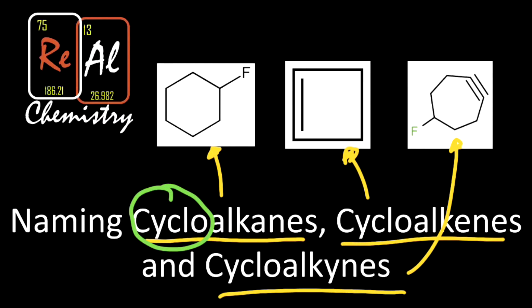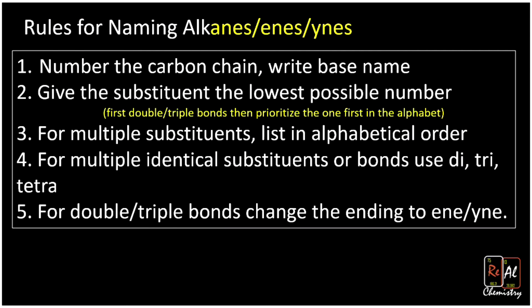Before we dive into some examples, let's remind ourselves of the rules we have for naming alkanes, alkenes, and alkynes. There are lots of rules there, so if you're not familiar with these, check out the lesson on alkanes and alkenes and alkynes first, and then come back here. You may want to pause the video to remind yourself of those rules.